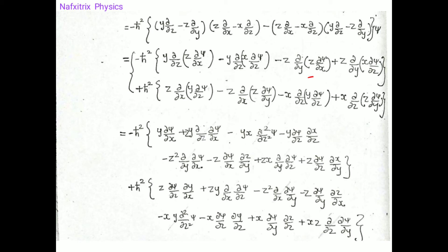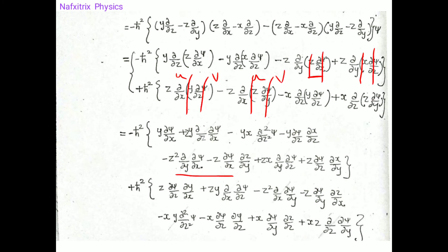Continuing in the same fashion for the remaining terms: applying the uv formula where u and v are identified for each term — z with ∂ψ/∂x, x with ∂ψ/∂z, y with ∂ψ/∂z, and z with z — and collecting all resulting terms.